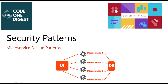One more category is the Security Pattern, which concerns security and privacy of services. One key pattern here is the Access Token Design Pattern, which suggests a token-based authentication and authorization mechanism to prevent misuse of APIs and services.